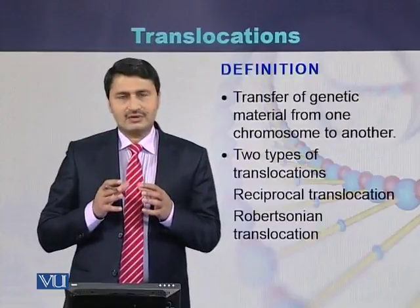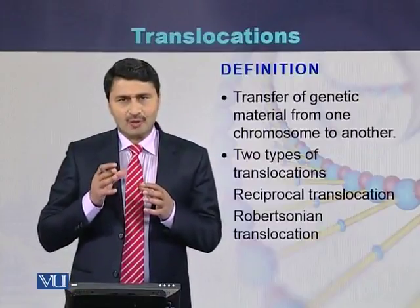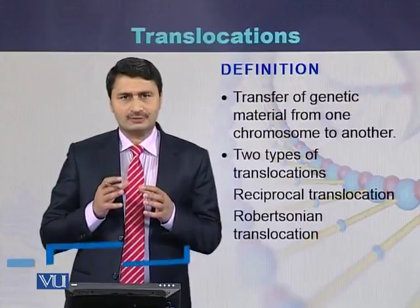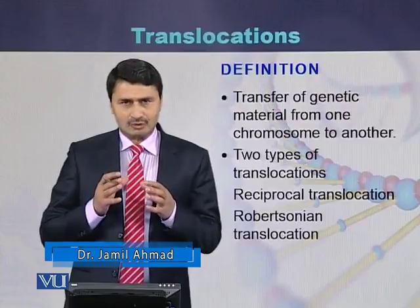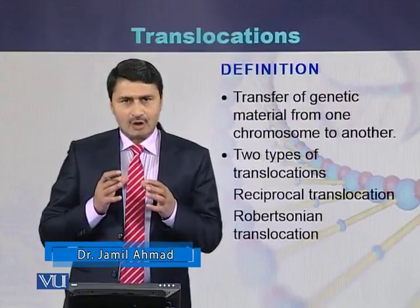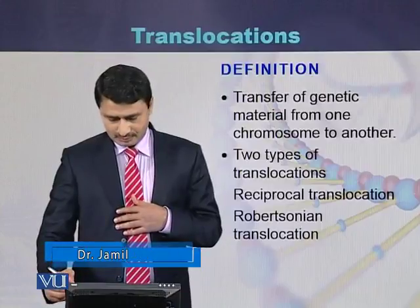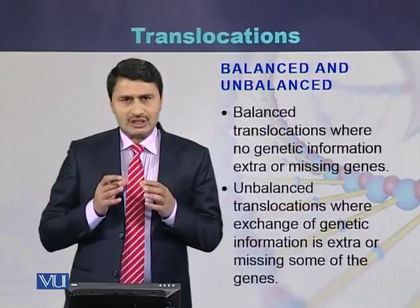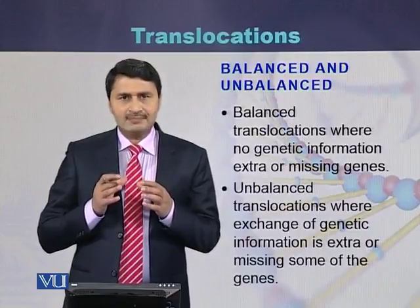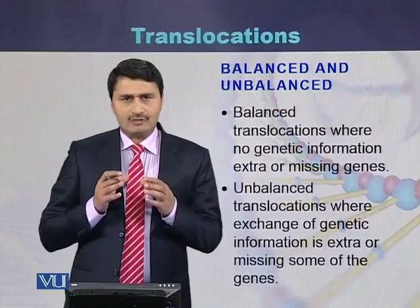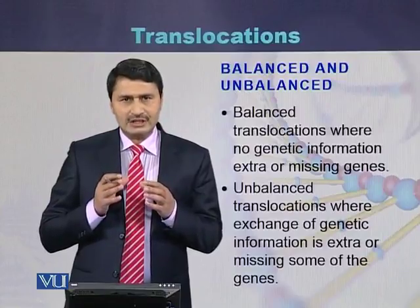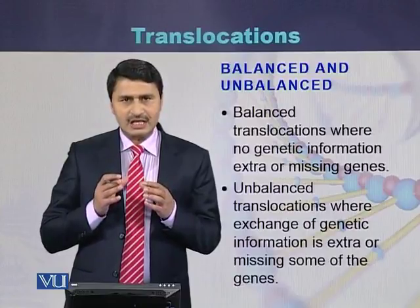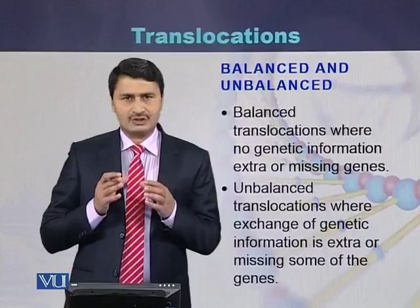Translocations: The transfer of genetic material from one chromosome to another chromosome is called translocation. Translocation can be reciprocal or Robertsonian. Based on the genetic material, translocation can be balanced or imbalanced. If there is no loss of genetic material, it is called balanced, and if there is loss of genetic material, it is called unbalanced translocation.